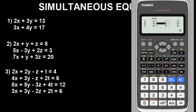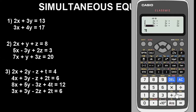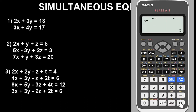For the second equation: coefficient of 5x is five, coefficient of negative 3y is minus three — make sure to include the negative sign — coefficient of 2z is two, and the constant is three. For the third equation: coefficient of 7x is seven, coefficient of y is one, coefficient of 3z is three, and the constant is 120. Press equals to get our results: x equals two, y equals three, and z equals one.